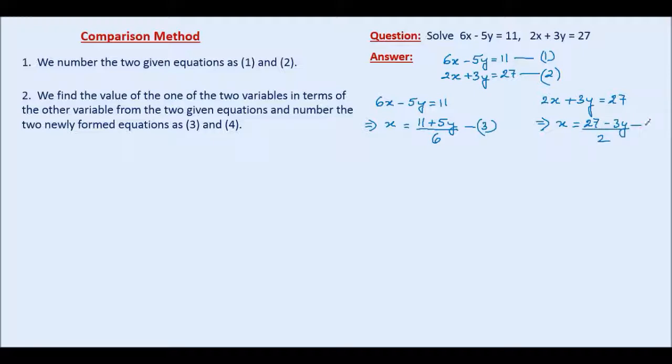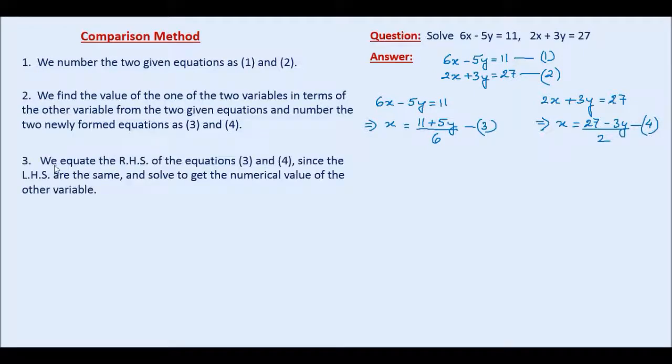Step number three. We equate the right hand sides of equations 3 and 4, since the left hand sides are the same. The left hand side of equation 3 is containing x and the left hand side of equation 4 is also containing x. So the left hand sides are the same. Therefore, we can equate the right hand sides and solve to get the numerical value of the other variable, in this case y.